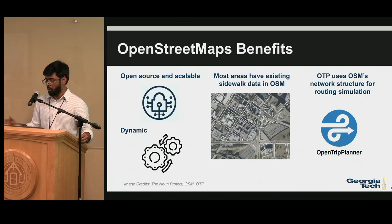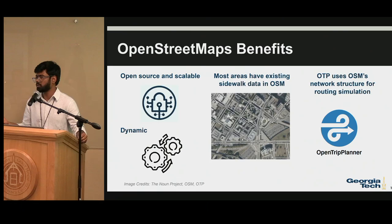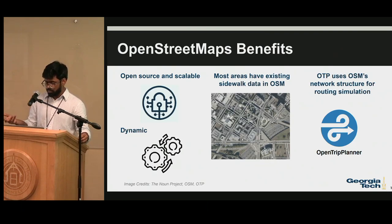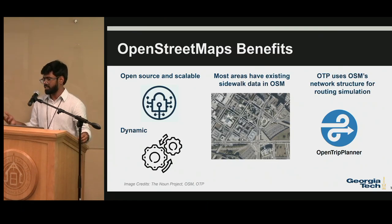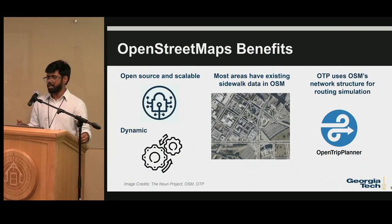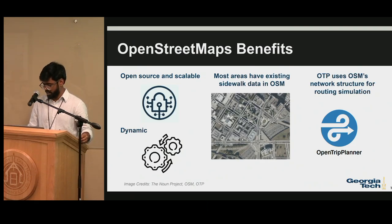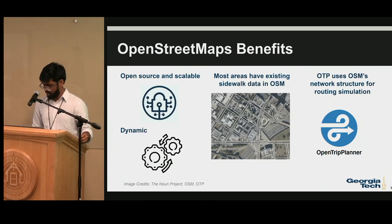OpenStreetMap brings a lot of benefits. First, it's open source, which makes it very scalable — the STM architecture can be deployed nationwide without investing again in creating a system architecture. Second, it's very dynamic: people map these spaces based on real-time conditions, so you don't need to deploy a team to assess conditions regularly. In most metropolitan areas the sidewalk network is almost complete, and OSM's network is compatible with OpenTripPlanner, which we use for shortest route simulation.